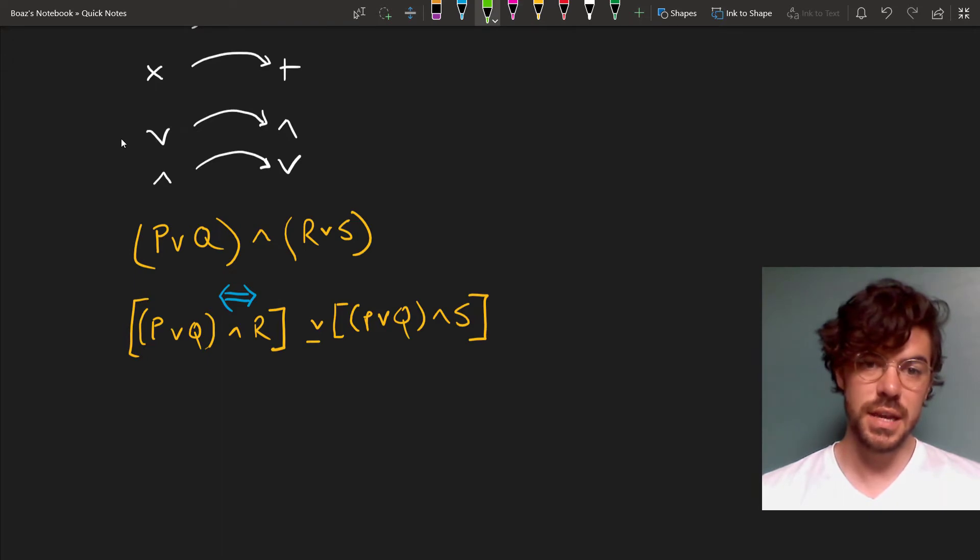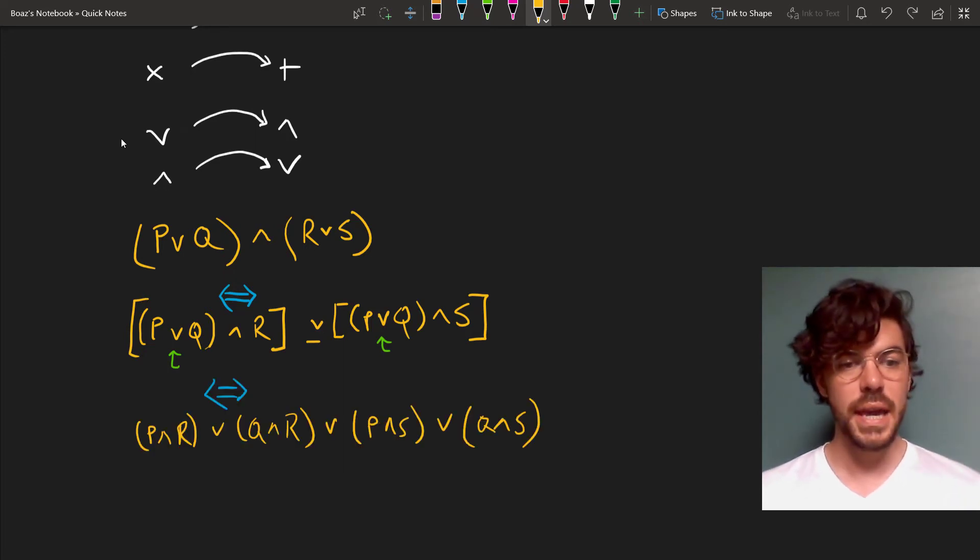But we still have these disjunctions here, so we're not quite where we want to get yet. We need one more turn of the screws. We apply the distribution of and over or one more time to get (p and r) or (q and r) or (p and s) or (q and s). And this sentence is in disjunctive normal form.